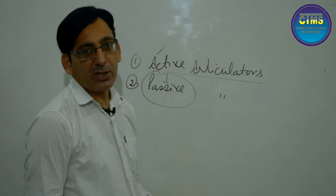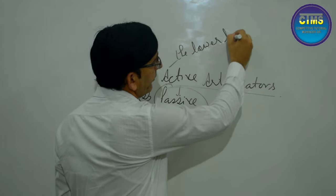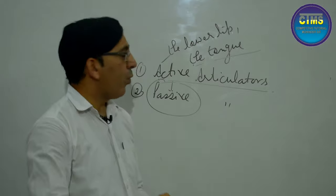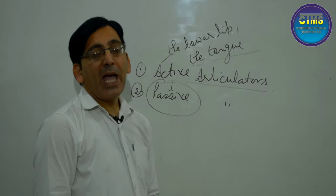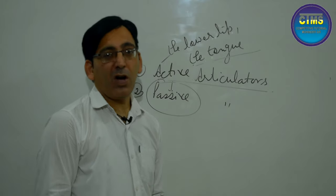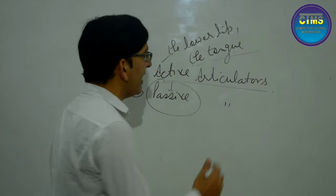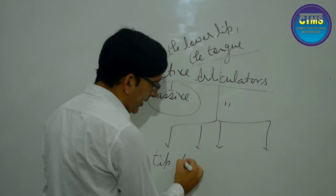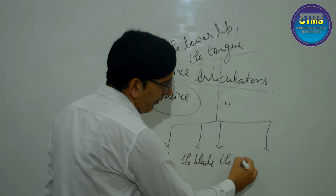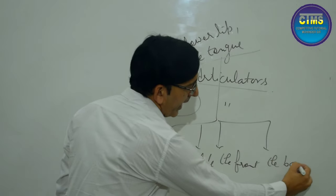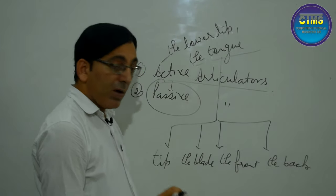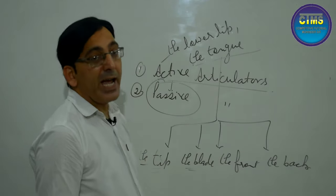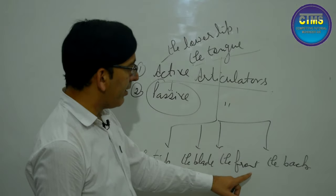If we talk about active articulators, one is the lower lip and the second is the tongue. When we talk about place of articulation or describe consonant sounds, the tongue is divided into four parts: the tip, the blade, the front, and the back. These are our active articulators — lower lip, tip, blade, front, and back.